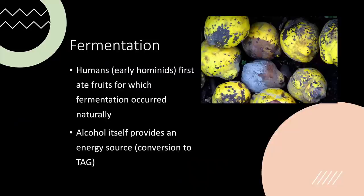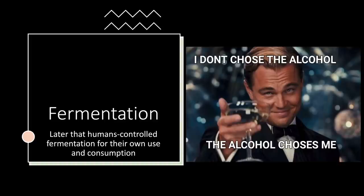Touching on fermentation — humans and early hominids first ate fruits, often rotting after falling from trees, with bacterial species fermenting them. The alcohol itself is an energy source, converted to triglyceride in the liver. Early humans ate these fermented fruits, converted the alcohol to triglyceride, and used it as an energy source in times of scarcity. We later started controlling fermentation for our own utility through alcohol, dairy products like yogurt, and bread.